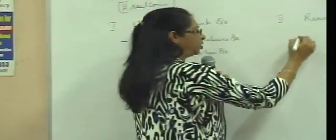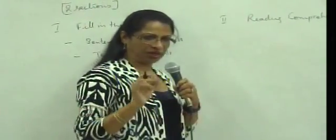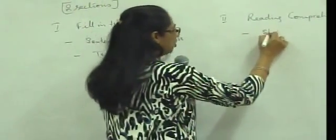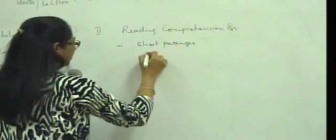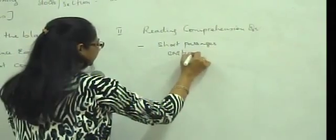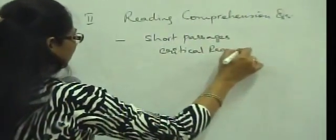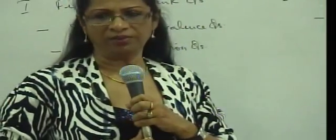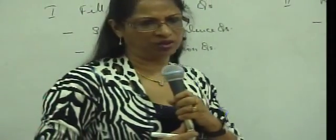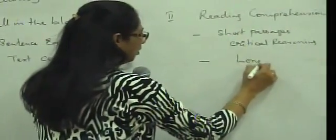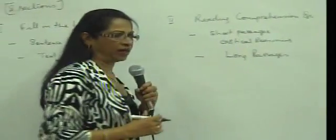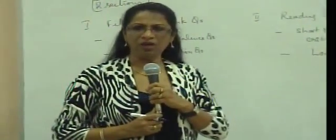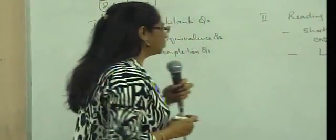The reading comprehension can be divided further into two types. You may get the short passages, which are generally considered more to be connected with critical reasoning. Basically, these are single paragraph, maybe one question or maximum two questions you can get. The other are the more longer passages, which can be anywhere from two to five paragraphs and two to four questions can be asked.